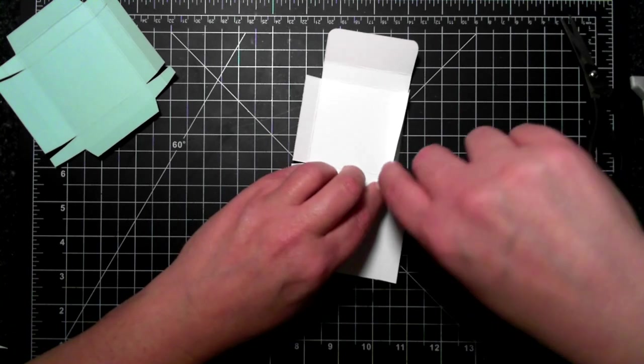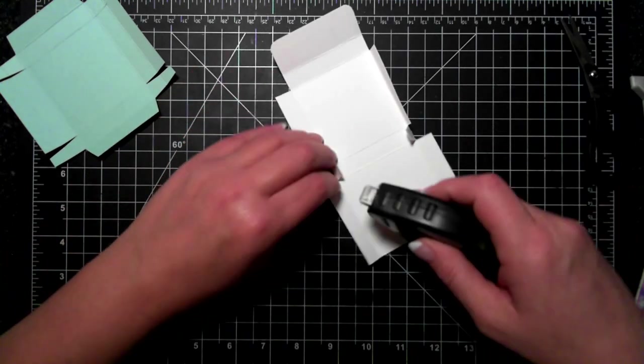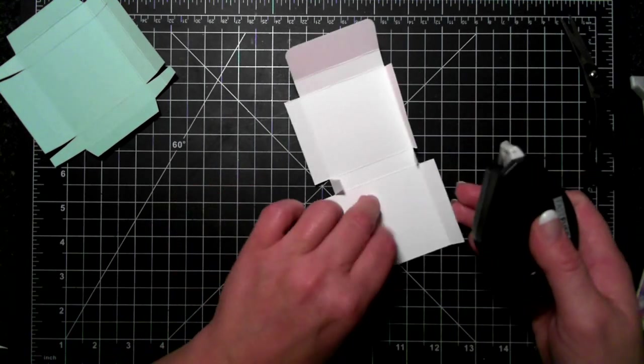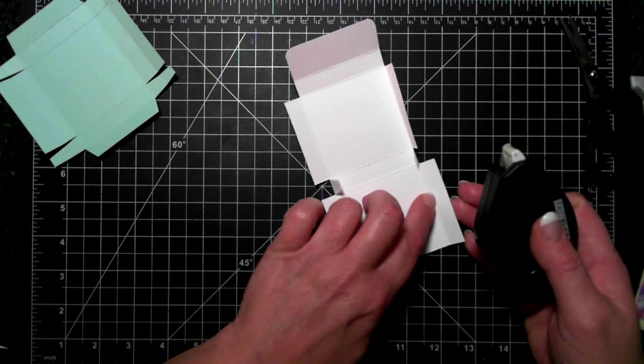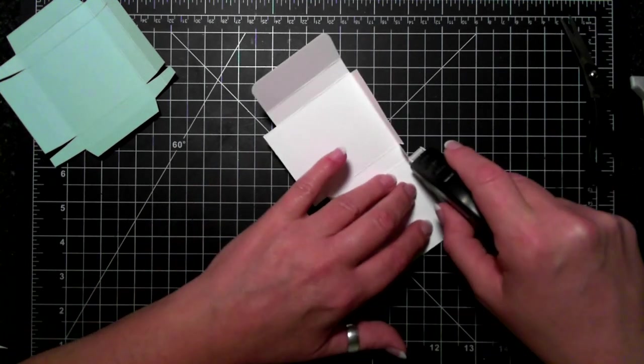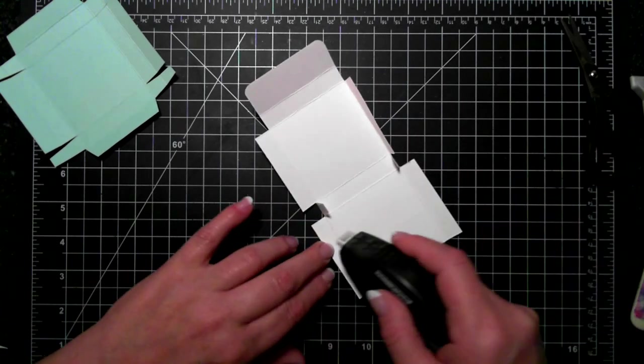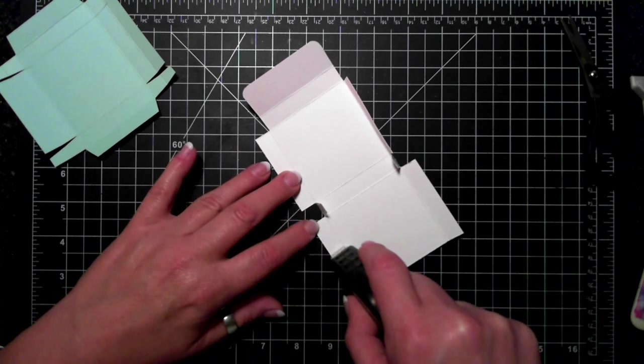I'm going to put a little adhesive on the inside flap there and the inside flap. I'm just turning it over. Then I'm going to take my adhesive and run it all the way along this side and all the way along this side.